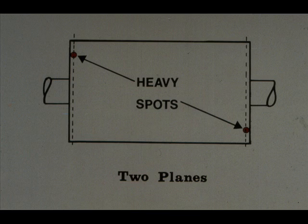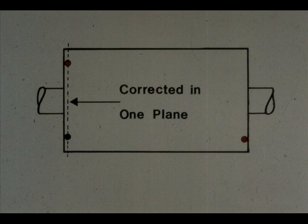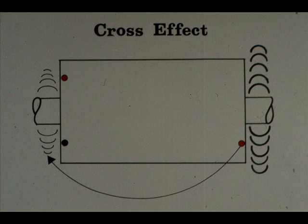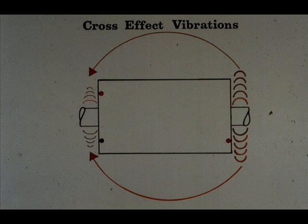There is also another factor which must be considered in balancing a rotating assembly in more than one plane. It is called cross effect. For instance, let's consider this electric motor rotor which has unbalance problems in two separate planes. Let's assume that we corrected the unbalance problem on the left end of the rotor by adding a correction weight. This does not mean that all of the vibration there would be eradicated. Some vibration would still remain due to cross effects from the unbalance on the other end. In other words, the right end may be unbalanced enough to create vibration that will shake the left end. This cross effect should always be considered during balancing in more than one plane.